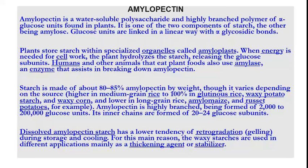Glucose units are linked in a linear way with alpha glycosidic bonds, also called ether bonds, which have an oxygen bridge. Plants store starch within specialized organelles called amyloplasts. When energy is needed for cell work, the plant hydrolyzes the starch, releasing glucose subunits.